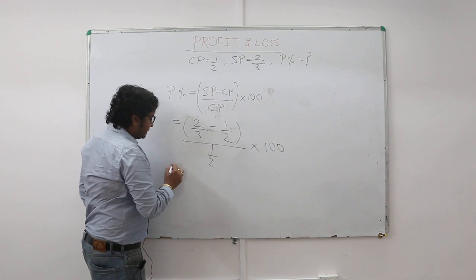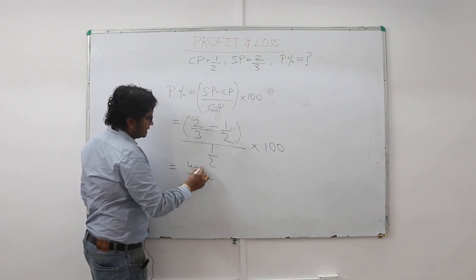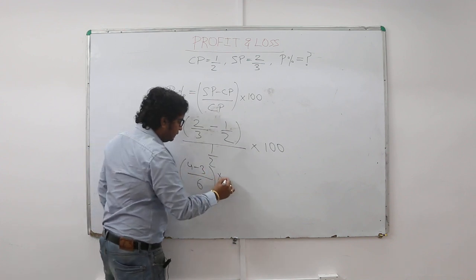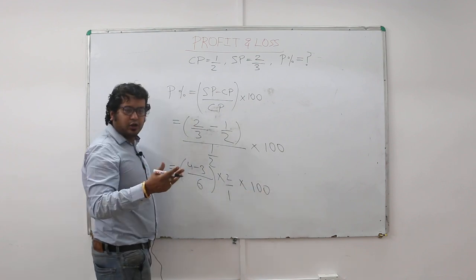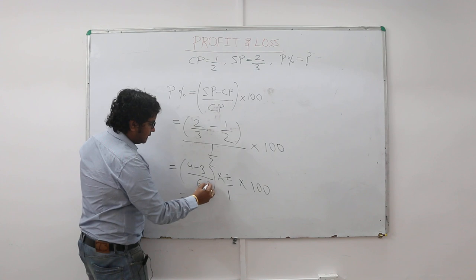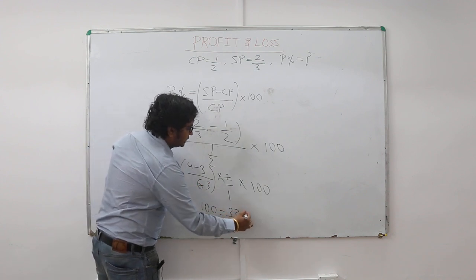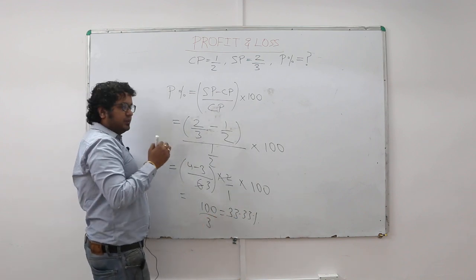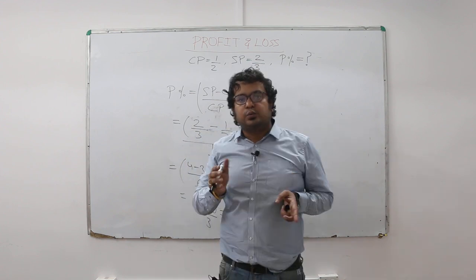So take the LCM here. In the numerator you get 6. So you have 4 minus 3 divided by 1 by 2 goes upward now into 2 by 1 and into 100. This is simple solving. What you get here is 100 divided by 3, that is equal to 33.33%. So the formula that we have used here is SP minus CP divided by CP whole into 100.